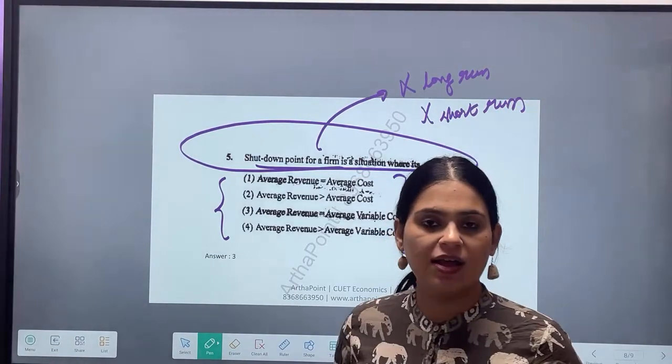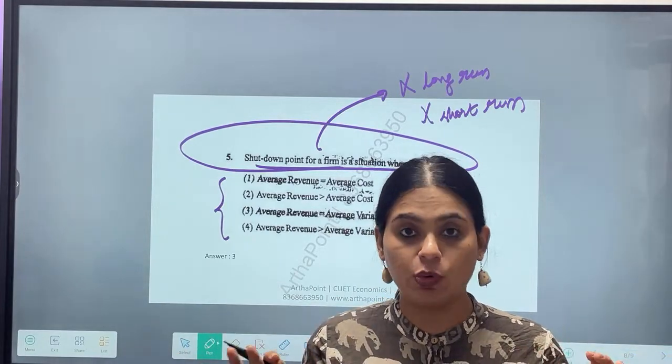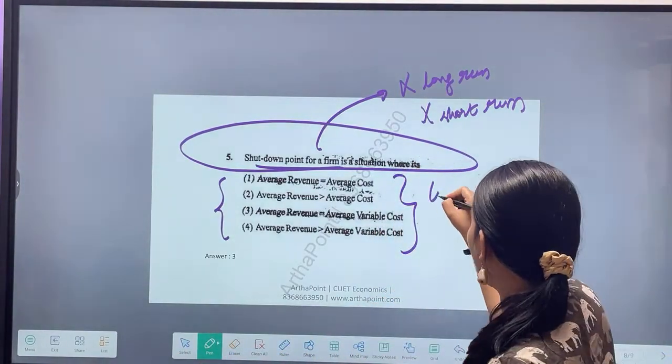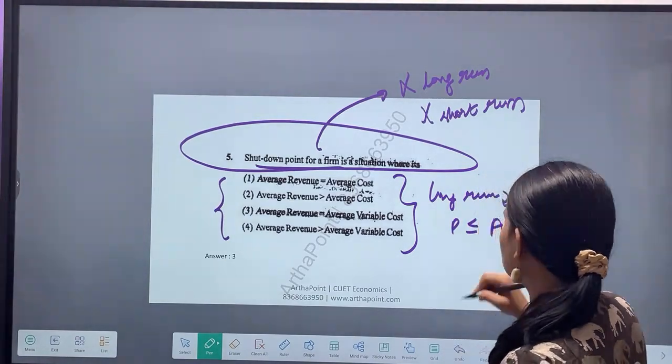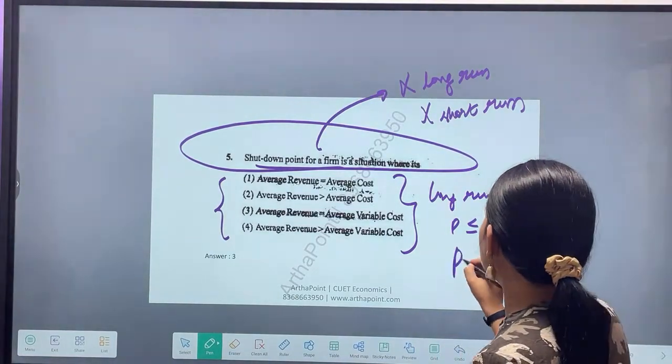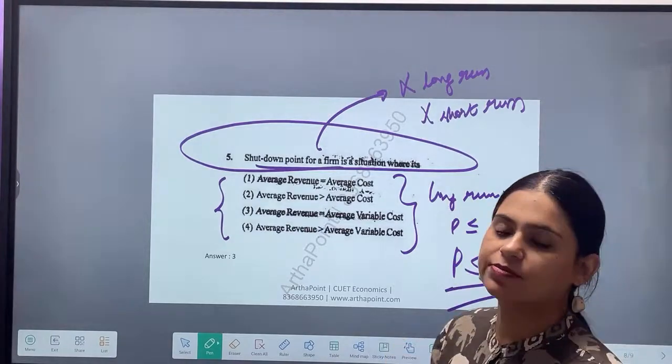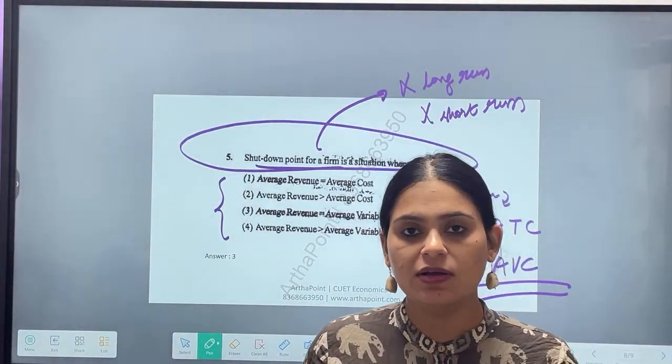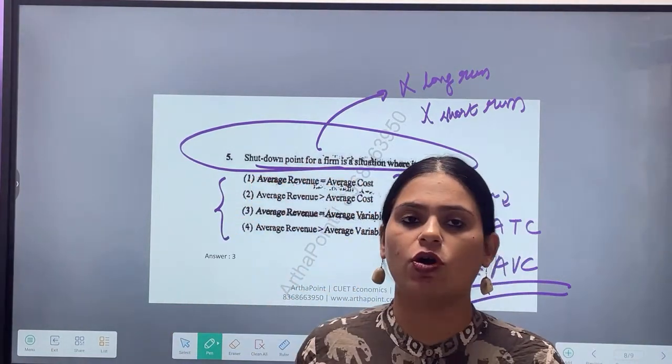Try to think about it. Here they did not mention long run or short run. We studied the shutdown points of both. In long run, I will shut down if I am not able to cover average total cost. In the short run, I will shut down if I am not able to cover average variable cost.